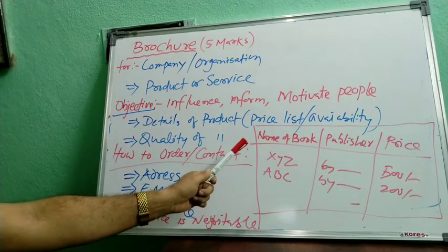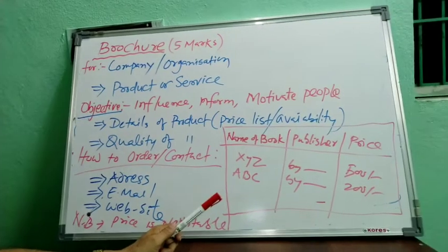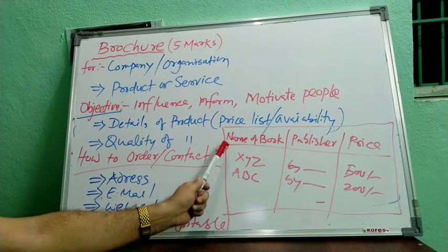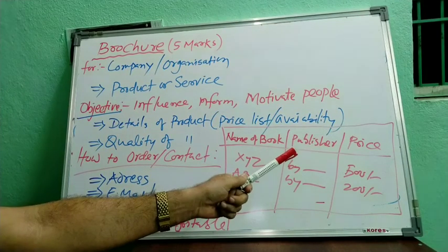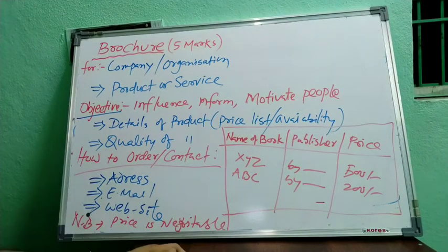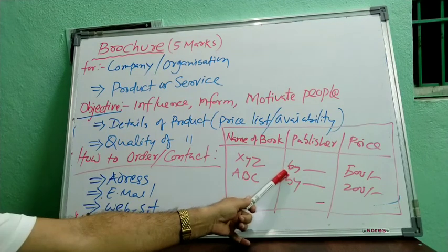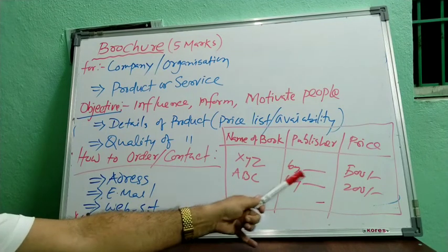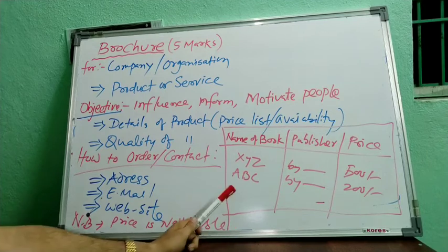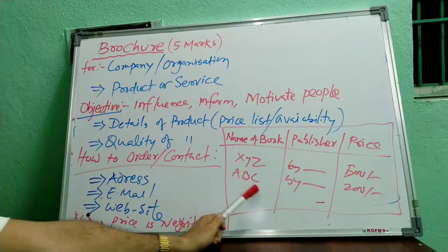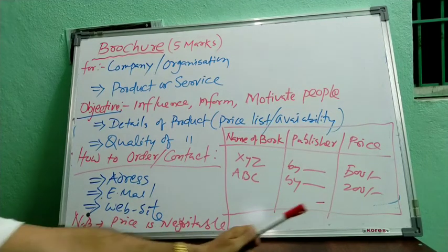You write a table like this. Can you see the table? Name of the book, publisher, and price. Suppose you say physics books by Kalyani Publication — price is given. And this is GK books by Nalanda Publication — price is given.